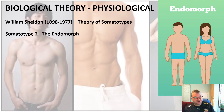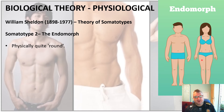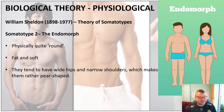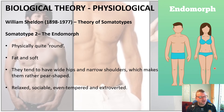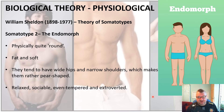His second somatotype was the endomorph. Endomorphs are physically quite round — fat and soft, tending to have wide hips and narrow shoulders, which gives them a more pear-shaped body. He believed that endomorphs were relaxed, sociable, even-tempered, and extroverted.